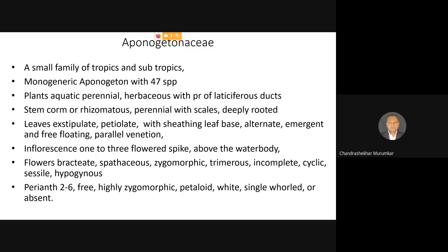Aponogetonaceae is an offshoot and the family has been separated from Hydrocharitaceae and raised to the level of a separate family. It is a very small family of tropics and subtropics, restricted especially to the old world — Africa, Asia, and Australia. It is a monogeneric family with a single genus Aponogeton, having almost 47 species. The plants are aquatic freshwater plants, found in stagnant water bodies, not in running water.